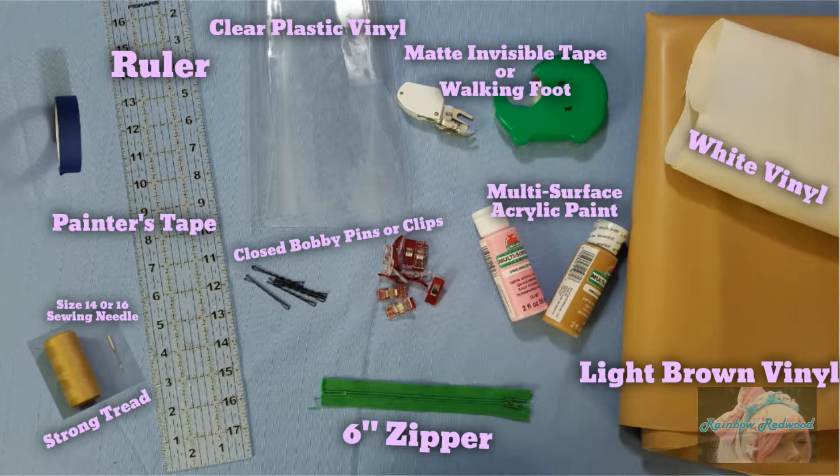Light brown plastic vinyl, white vinyl or whatever color you would like your frosting to be, size 14 or 16 sewing needle.